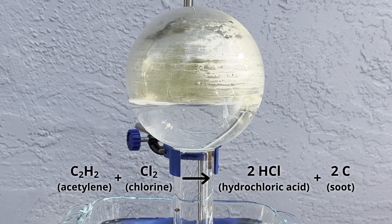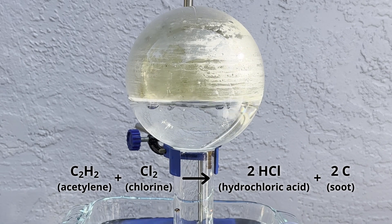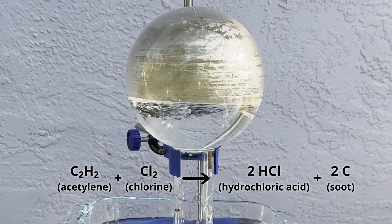Here, the acetylene and the chlorine react to make hydrochloric acid and carbon soot, which is the black stuff you can see floating around.